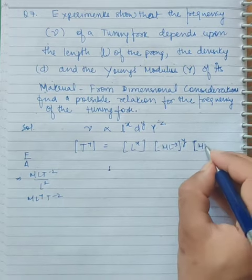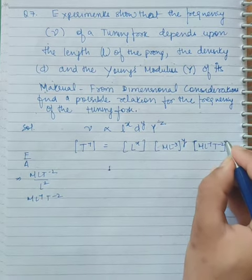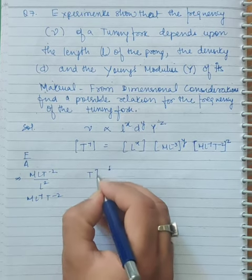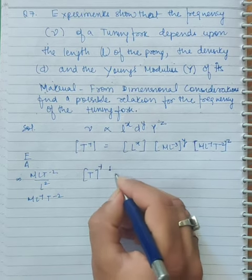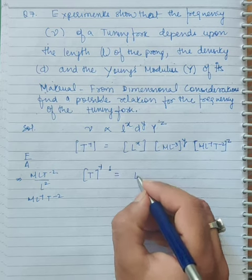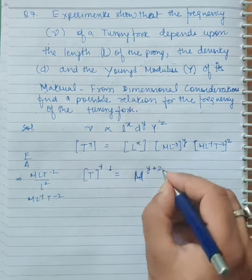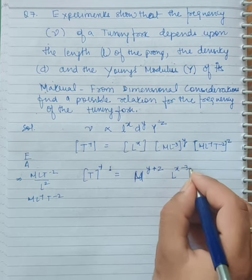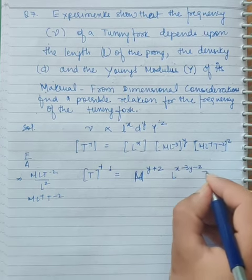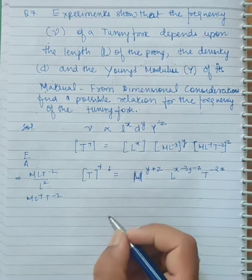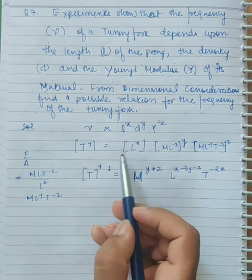So T to the power minus 1 equals L to the power x, density to the power y, and Y to the power z. This gives us M to the power y plus z, L to the power x minus 3y minus z, and T to the power minus 2z.